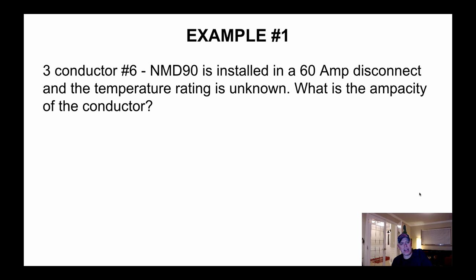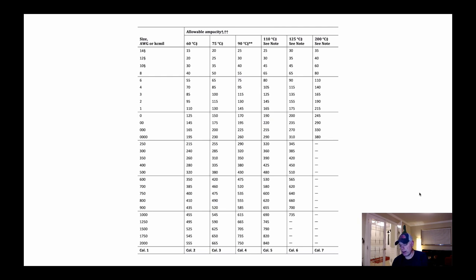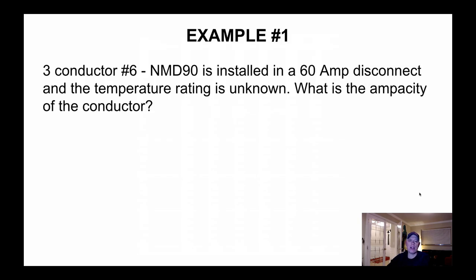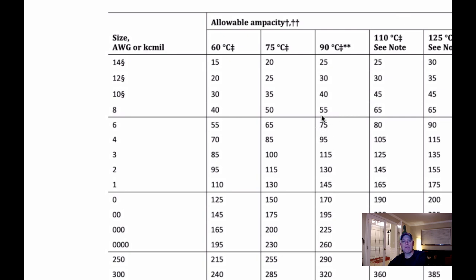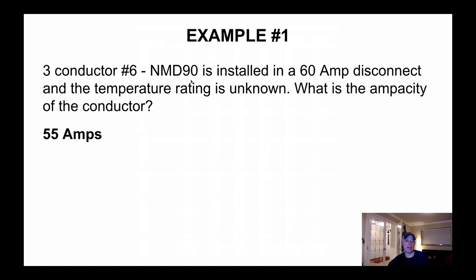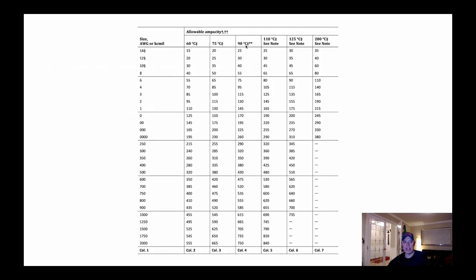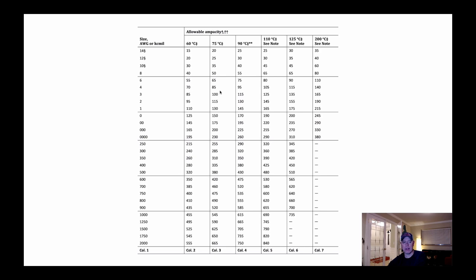Example 1: a three-conductor No. 6 NMD90 is installed in a 60-amp disconnect and the temperature rating is unknown — what is the ampacity of the conductor? Looking at Table 2, No. 6 at 90°C would be 75 amps, but because this is a 60-amp disconnect and we don't know the temperature rating, we have to base it at 60°C since it's 100 amps and below. So the ampacity is 55 amps — we use the 60-degree column, which gives us 55.